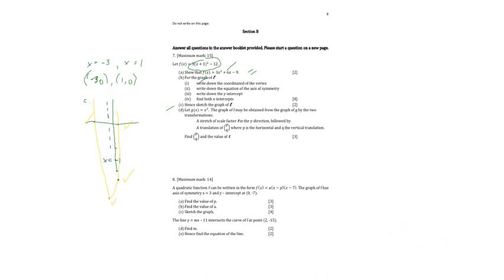Let g(x) equals x². The graph of f may be obtained from the graph of g by the transformation. So it is saying that we started from g.